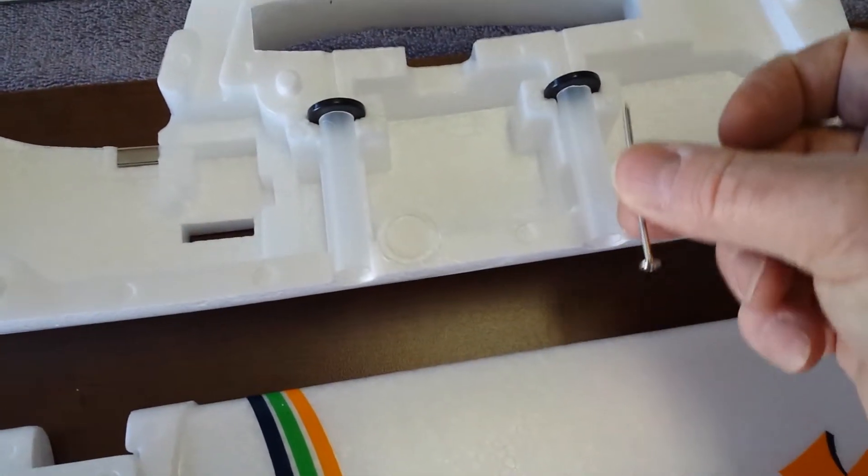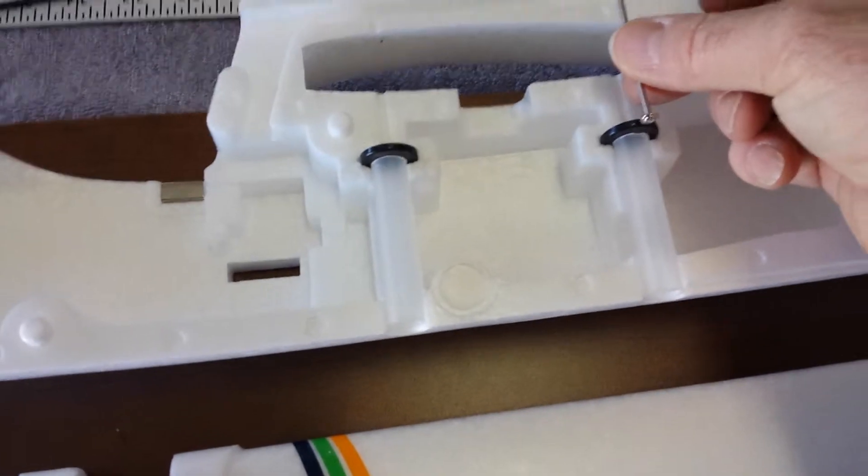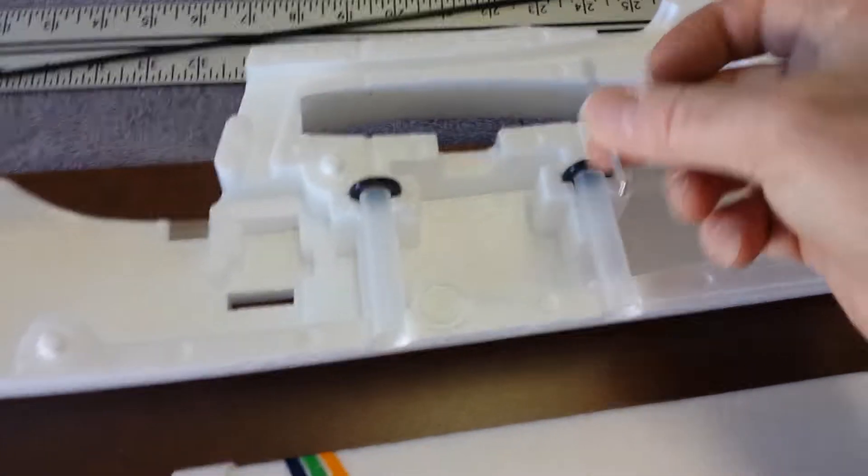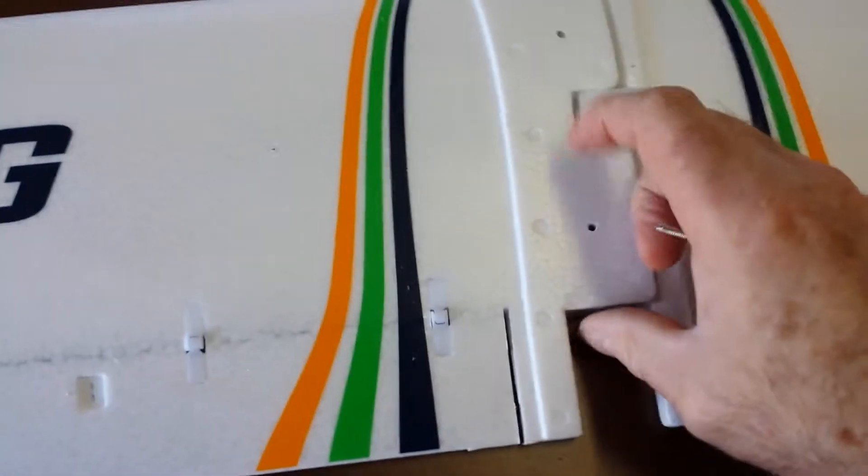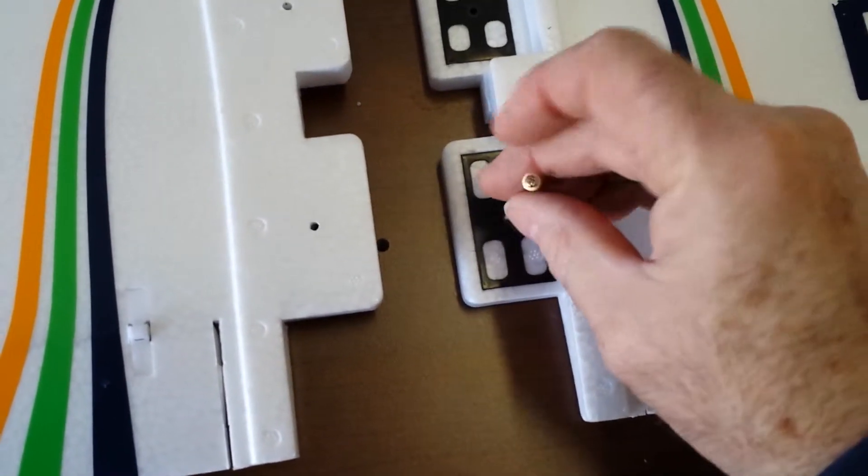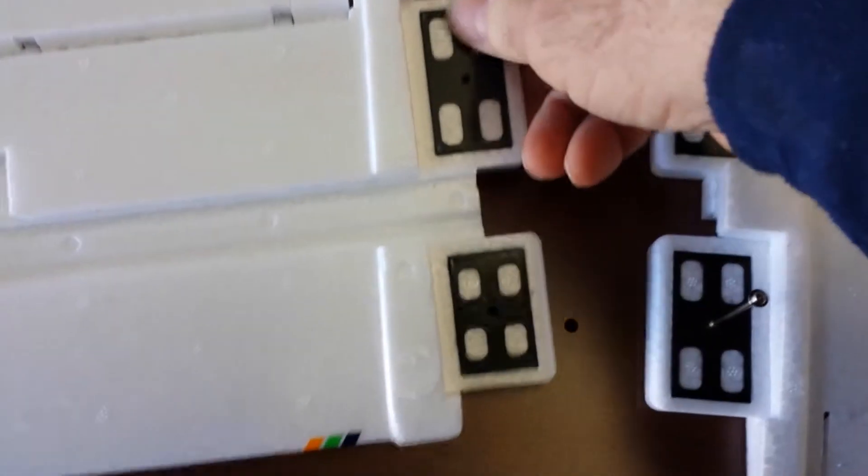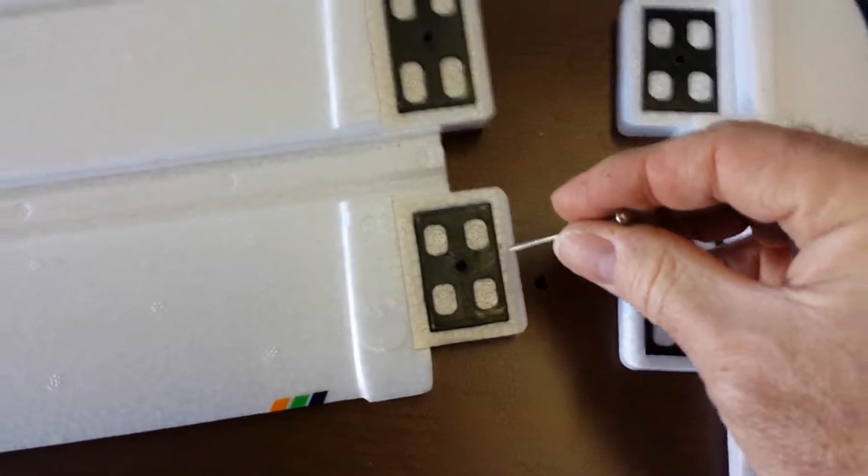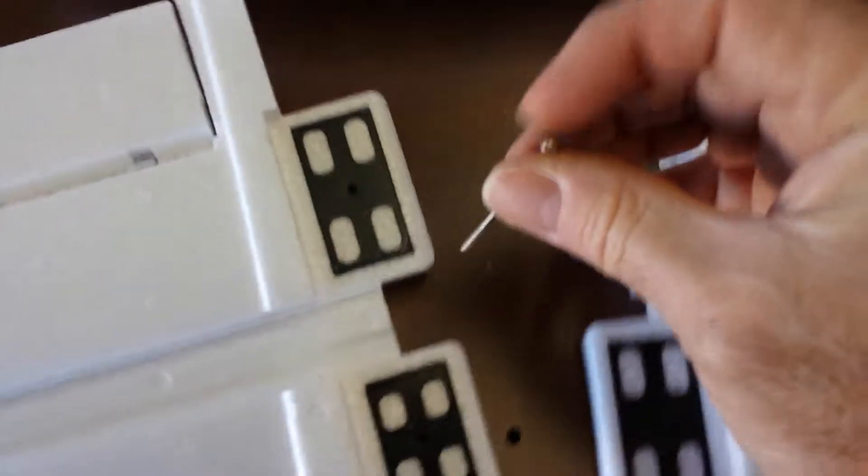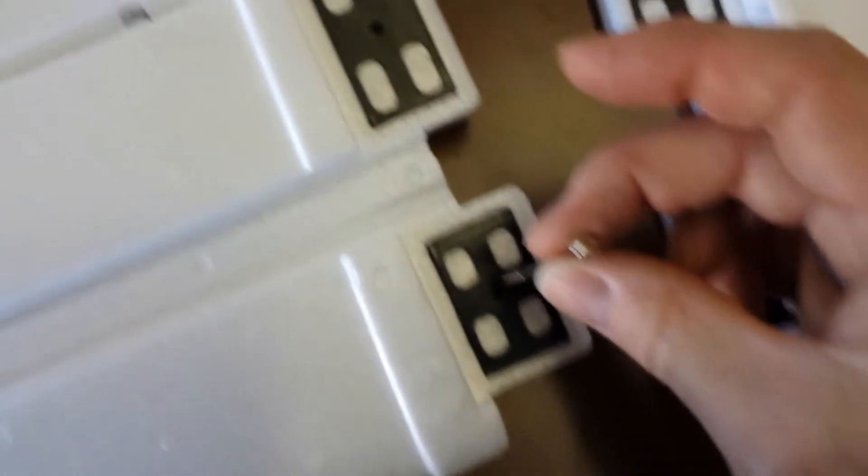These screws go up through the tubes and into the wings, and the screws actually go through one side of these plastic stays and then attach in the other side. So what I'm going to do is I'm going to drill these holes out.